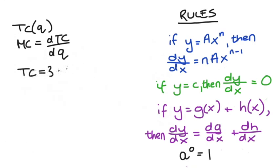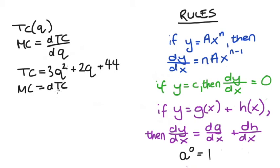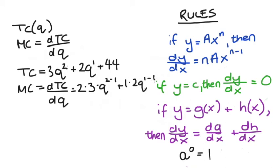Let's do one more. Let's look at the cost function TC equal to 3q² plus 2q plus 44. Marginal cost is just the derivative of this function with respect to q. For the first term: take 2 out the front, multiply by 3, take 1 off the exponent. For 2q — which is implicitly 2q to the power of 1 — 1 comes out the front, times 2, times q to the power of 1 minus 1. And 44 drops out since it's a constant. This reduces to 6q to the power of 1 plus 2q to the power of 0, which simplifies to 6q plus 2.